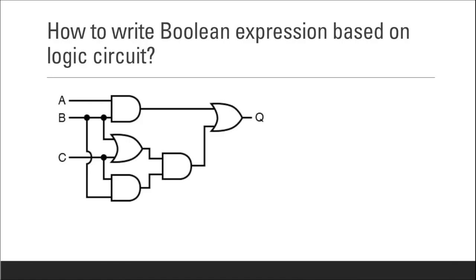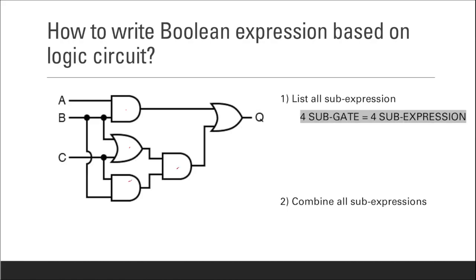For the next logic circuit, we again list all sub-expressions and then combine them. There are four sub-gates, so there are four sub-expressions. The first gate is an AND gate, so the first expression is A dot B.